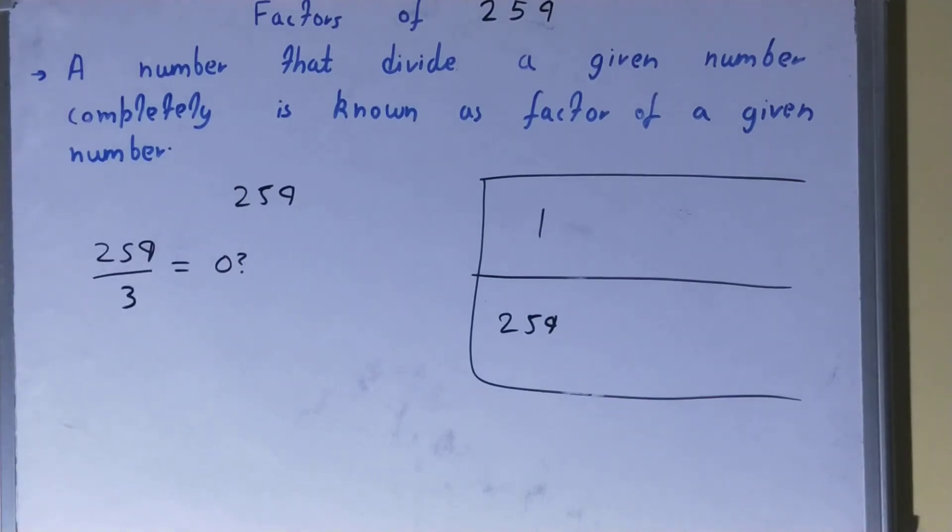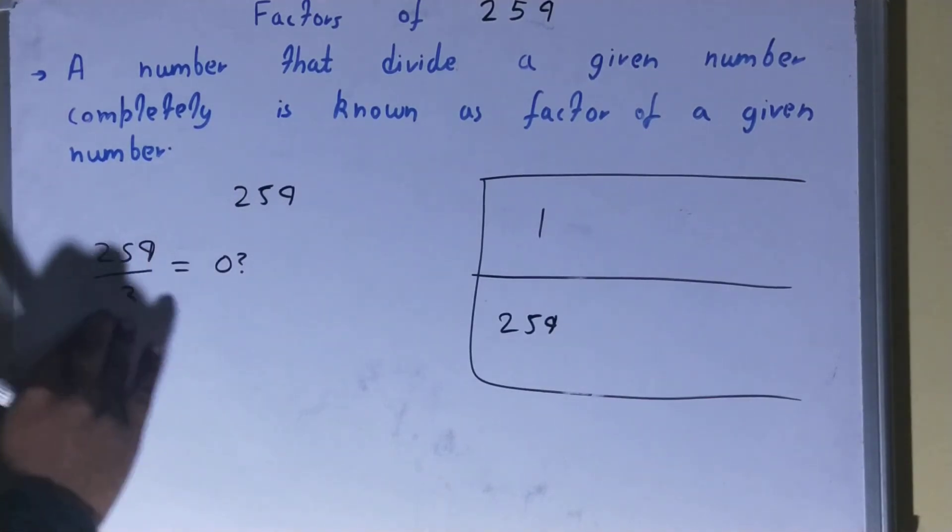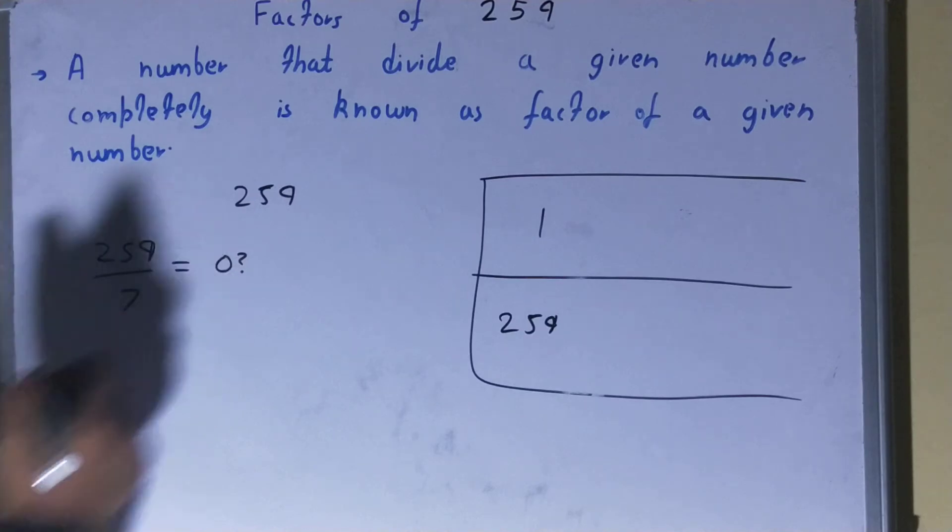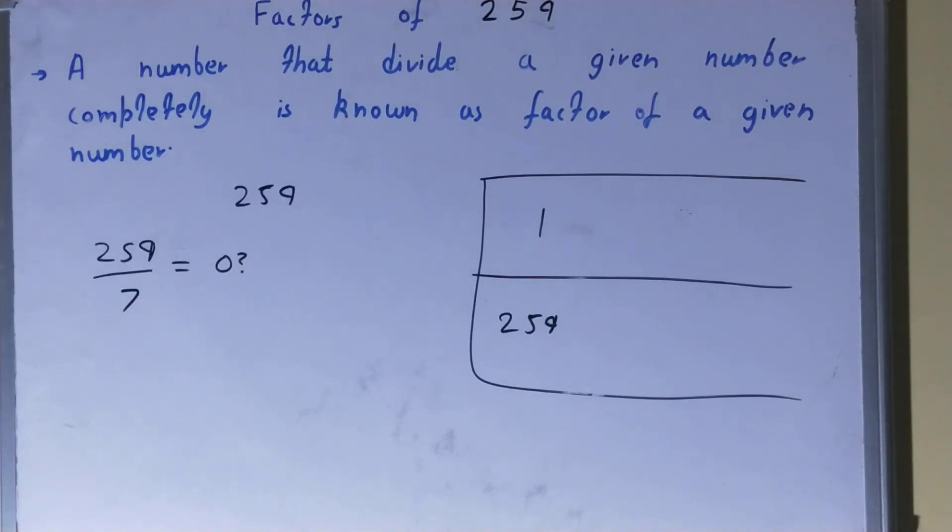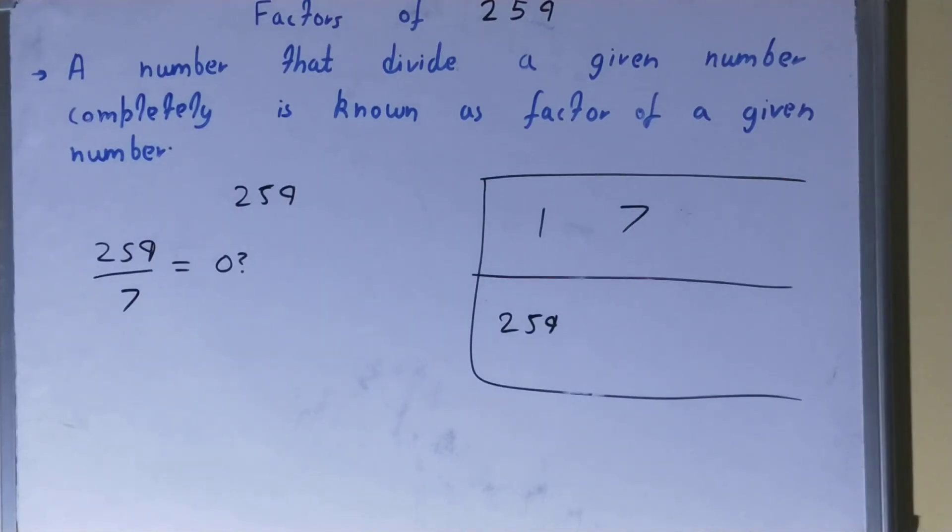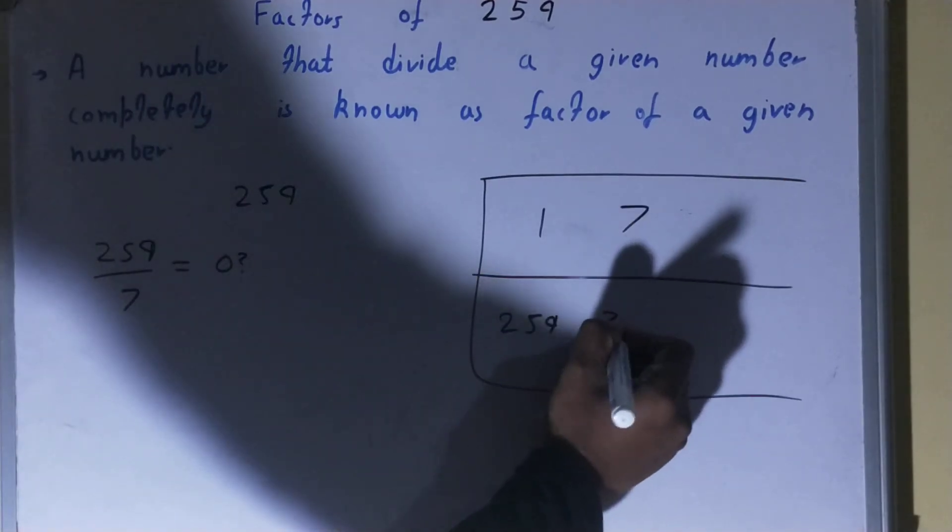3... it's 24, 1, 9... not possible. Let's check with 5. The last digit is neither 5 nor 0, so it is not possible. Let's check with 7. 7 threes are 21, 49... yes, it is possible. So 7 is a factor. And 7 into what times? 7 threes are 21, 7 sevens are 49... it will be 37 times. So 37 will also be the factor.